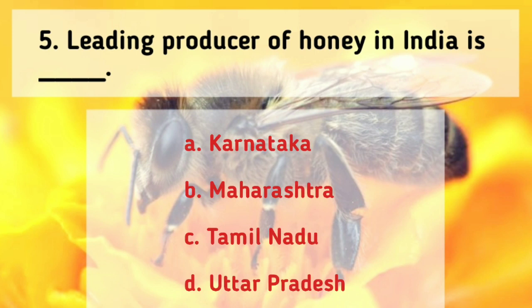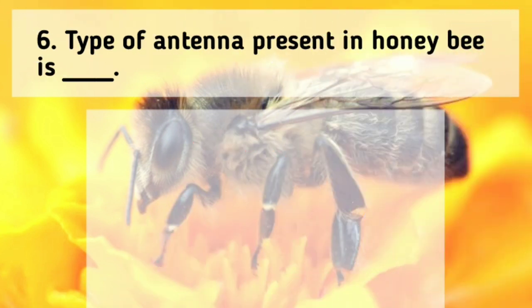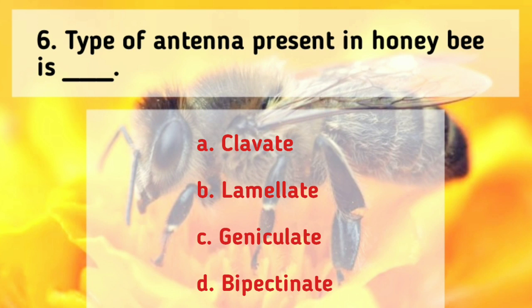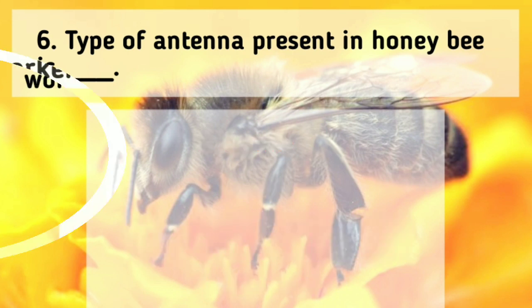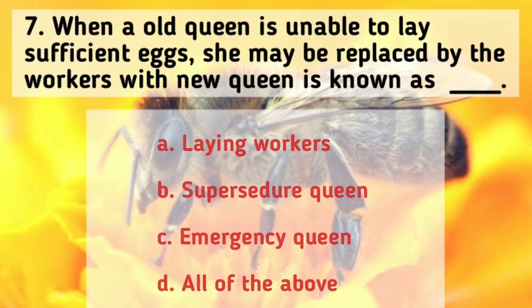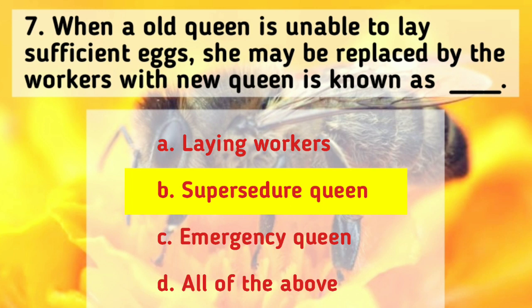Leading producer of honey in India is Tamil Nadu. The type of antenna present in honey bee is geniculate. When an old queen is unable to lay sufficient eggs, she may be replaced by the workers with a new queen — this is known as supersedure.